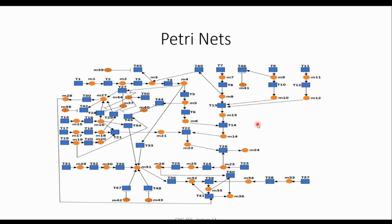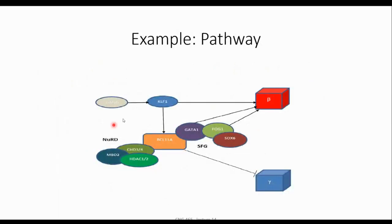There are other computational methods like Petri nets — a directed graph mathematical method. This is very flexible; we can add different properties to it, and by using it you can even understand approximately what the level of beta-globin would be. This Petri net is derived from the pathway. It takes time to get familiar with modeling in Petri nets, but as soon as you do, things will be much easier.